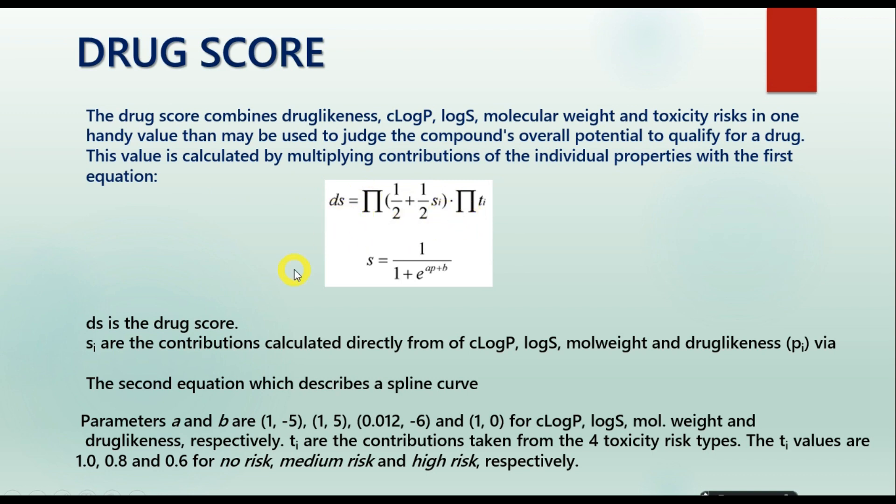And the drug score can be calculated using the following equation. Here, ds represents your drug score, and the SI contributions are calculated directly from the values of log P, log S, molecular weight, and drug likeness from the second equation, where S equals 1 divided by 1 plus e to the power aP plus b.